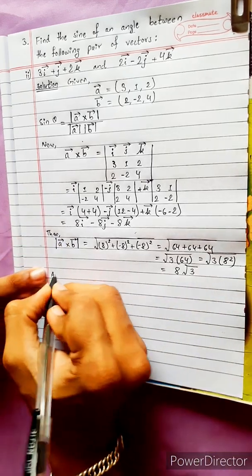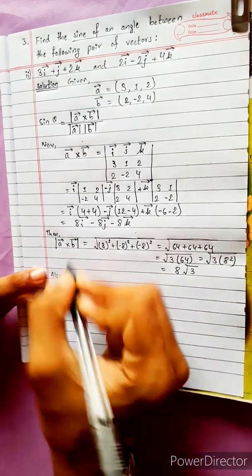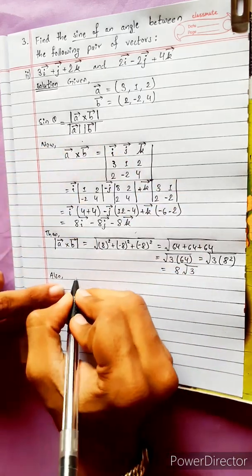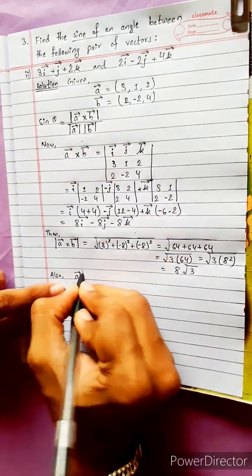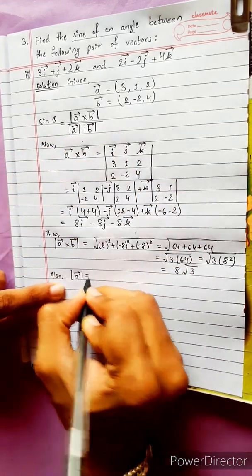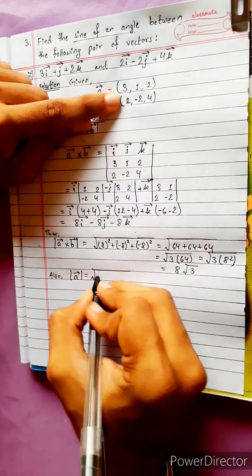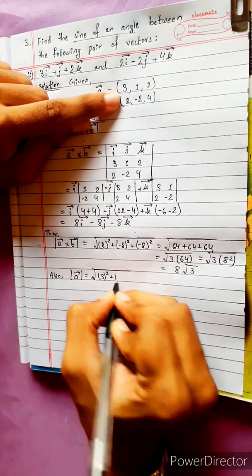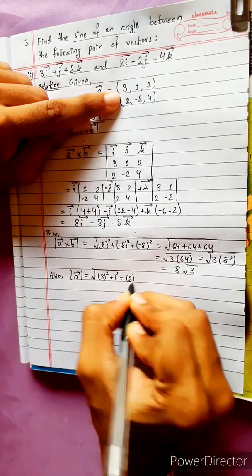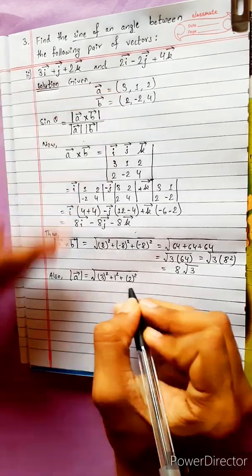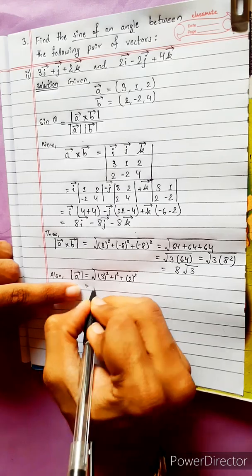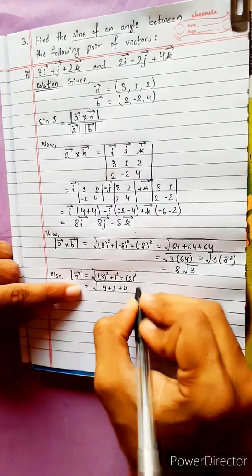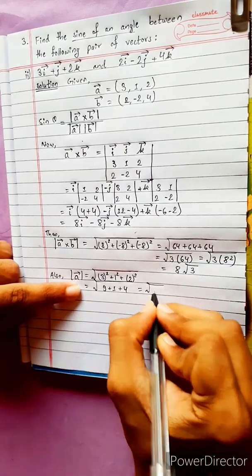Now for the magnitude of vector A: with components 3, 1, 2, the magnitude is the square root of 3 squared plus 1 squared plus 2 squared, which equals the square root of 9 plus 1 plus 4, giving us the square root of 14.